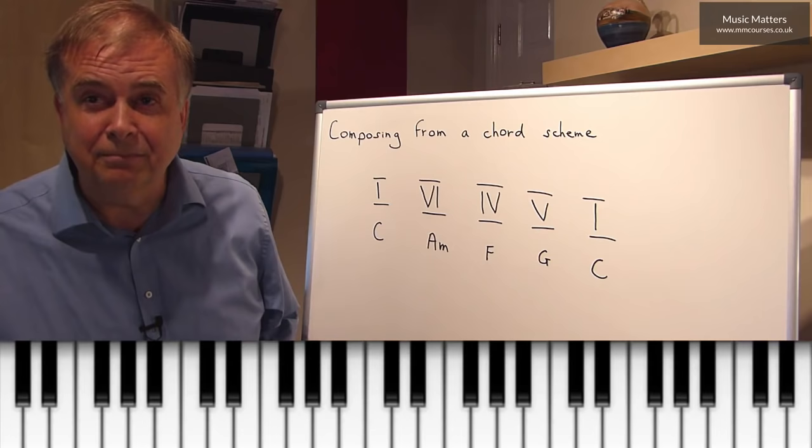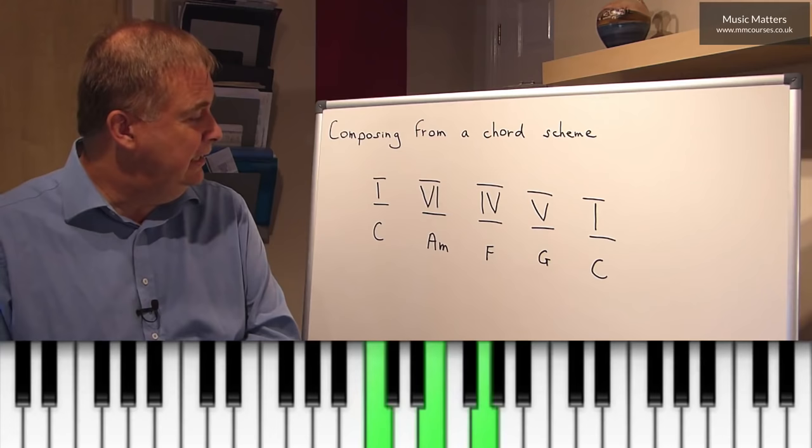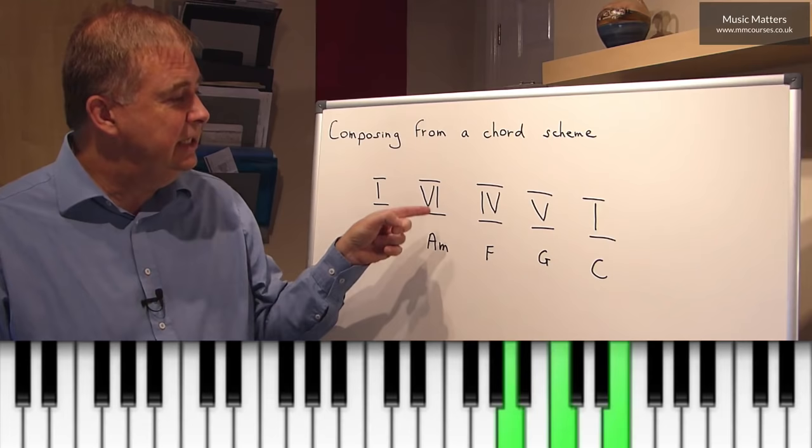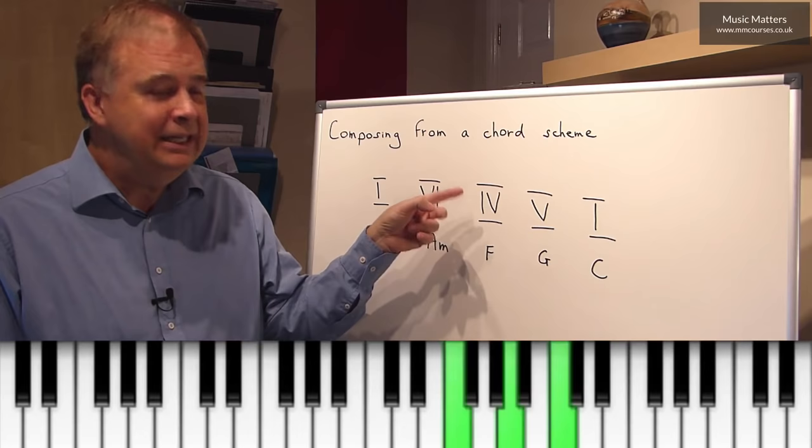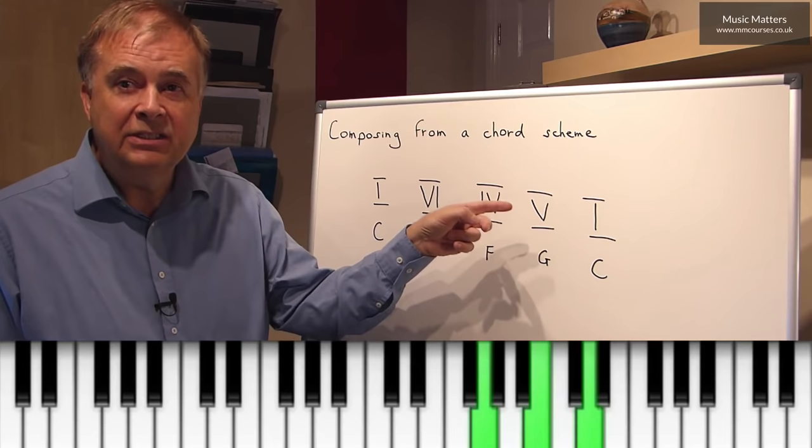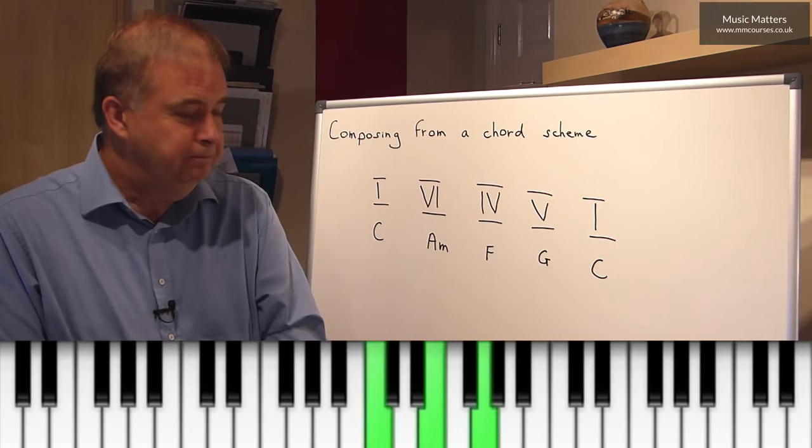So here's chord I, a chord of C, so that's C, E and G. Here's chord VI, the A minor chord, so that's A, C and E. Here's chord IV, the F chord, F, A and C. Here's chord V, the G chord, G, B and D. And then back to chord I again, C, E and G.